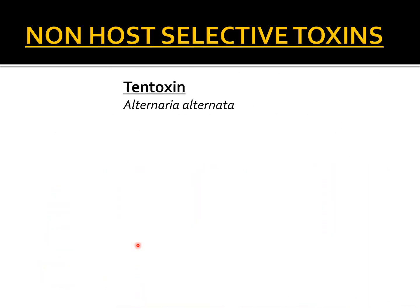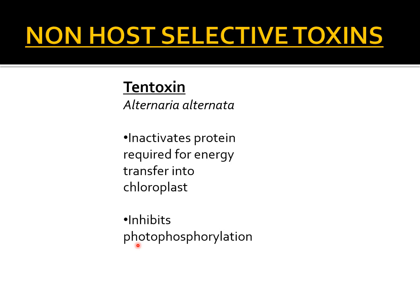The next toxin is tentoxin, produced by the fungal species Alternaria alternata, which causes chlorosis in seedlings. This toxin inactivates the protein required for energy transfer into chloroplasts, slowing down the functioning of plant cells. It has also been shown to inhibit photophosphorylation, which is the light reaction of photosynthesis — thereby blocking the first step of photosynthesis itself.